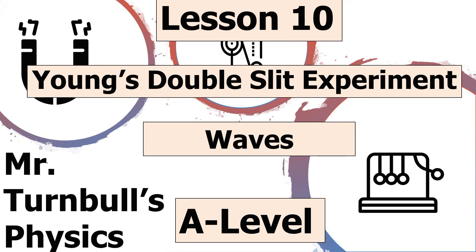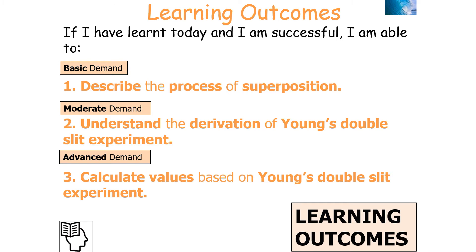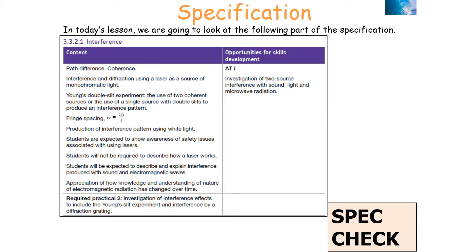Hello and welcome to this lesson on the Young's Double Slit Experiment, which is part of the waves topic for AQA A-level physics. In today's lesson, we're going to look at explaining the process of interference for light waves. If we've been successful, we can describe the process of superposition, understand the derivation of the Young's Double Slit Experiment, and calculate values based on it. We'll be looking at AQA specification section 3.3.2.1 Interference, which is part of the waves topic.